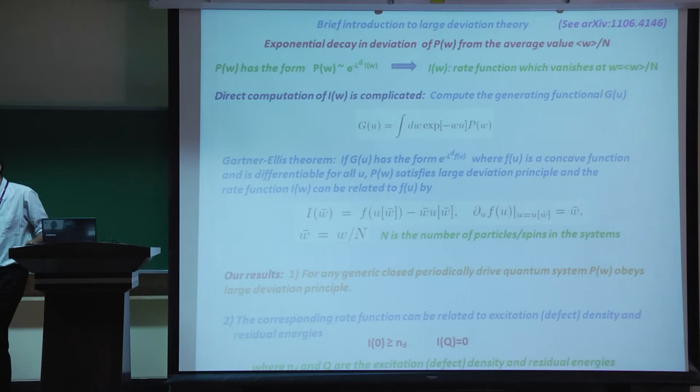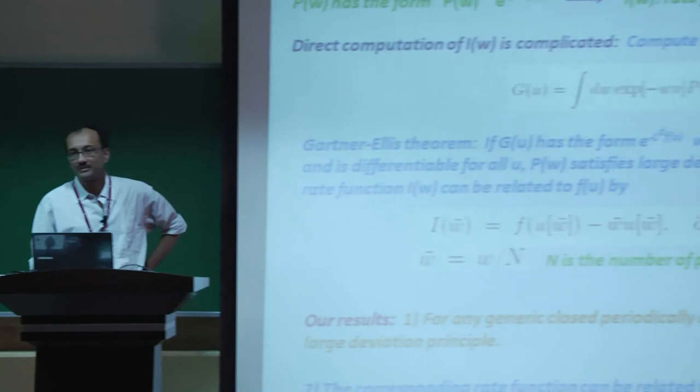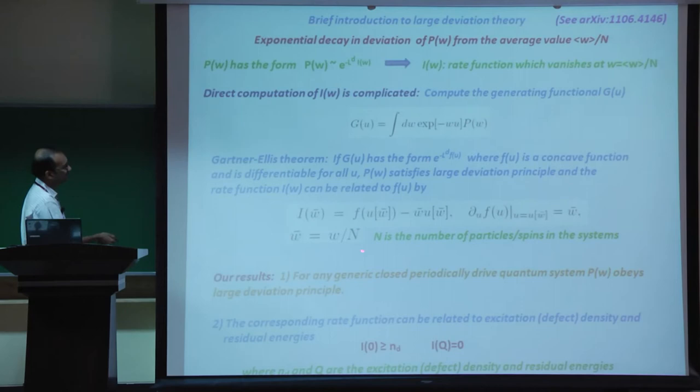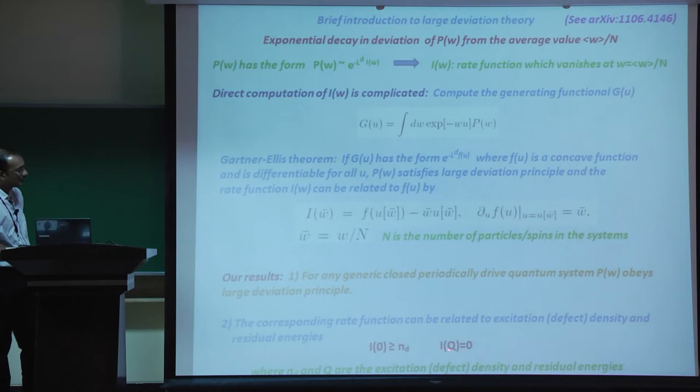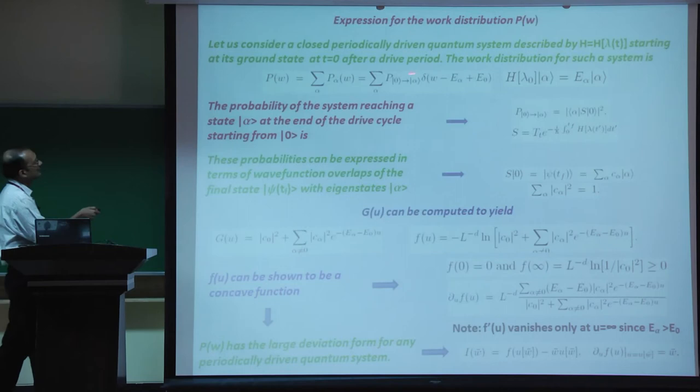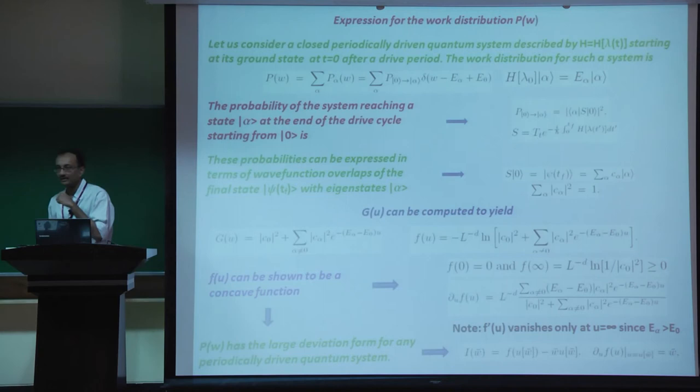For any generic periodically driven closed quantum system, P(w) obeys a large deviation principle - we showed that F(u) is concave. The rate function satisfies: I(0) >= N_d (excitation density) and I(Q) = 0 where Q is the residual energy. For a periodic drive, the probabilities P_{0->alpha} can be expressed in terms of wave function overlap of the final state with eigenstate alpha, and the Laplace transform G(u) takes a specific computable form.